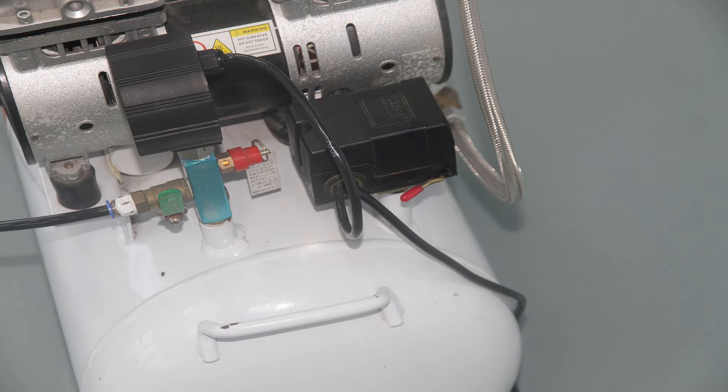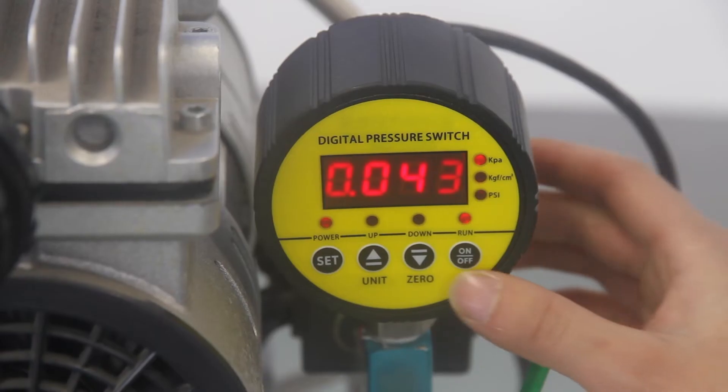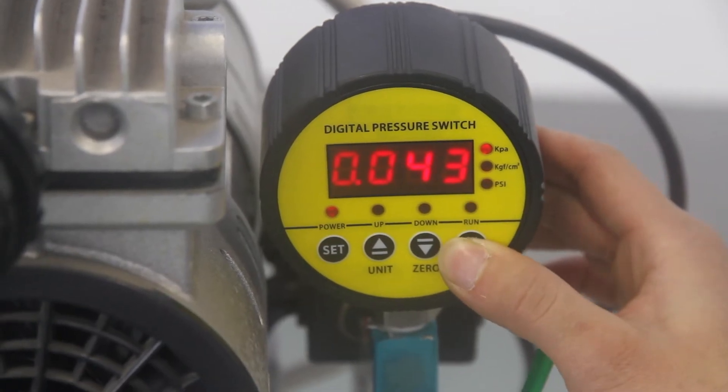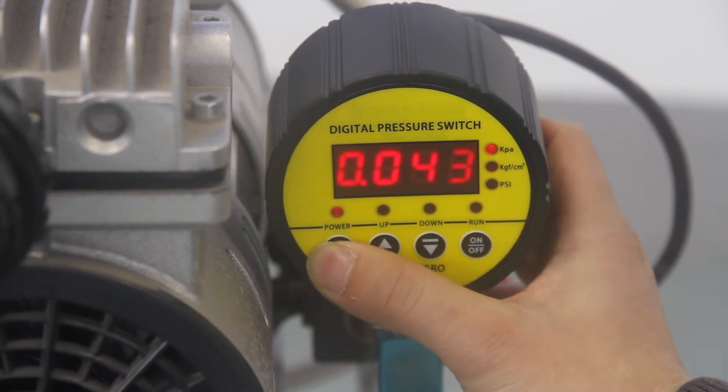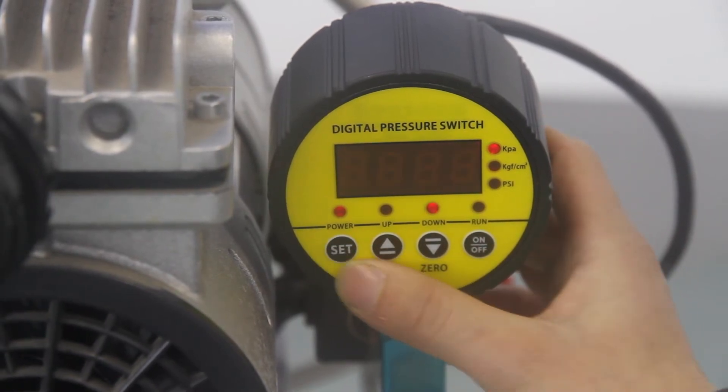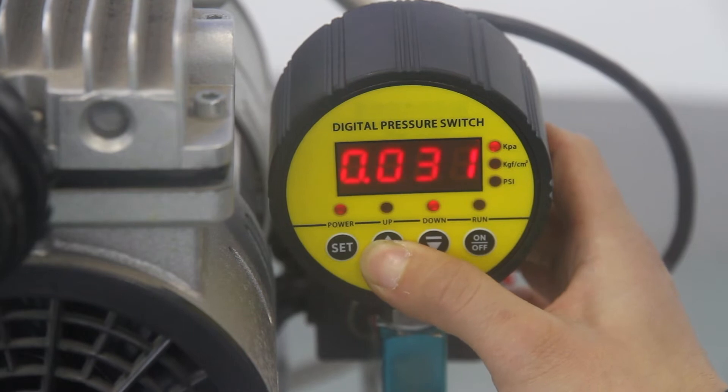The second step, we adjust the pressure control range. Push the on-off button, set button, adjust the lower limit.